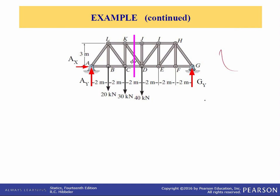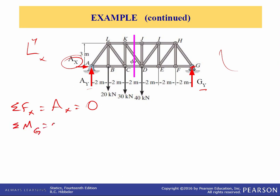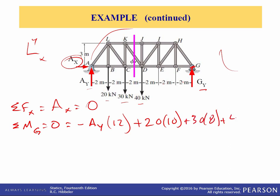Here's the free body diagram of the truss. If we establish a coordinate system x and y and sum forces in the x direction, the only force in the x direction is A sub x, so A sub x equals zero. If we sum moments about point G, that'll get rid of the unknown Gy and we can solve directly for A sub y. Summing moments about point G equals zero: Ay tends to rotate clockwise, so it's negative Ay times 12 meters. The moments due to the three applied forces are all positive: plus 20 times 10, plus 30 times 8, plus 40 times 6. Solving, A sub y comes out to be 56.7 kilonewtons.